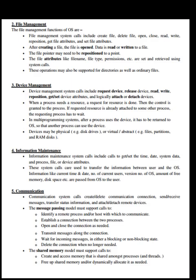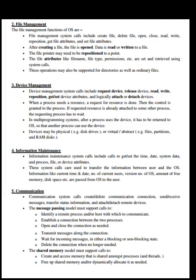File management system calls include create file, delete file, open, close, read, write, reposition, get file attributes, and set file attributes. After creating a file, the file is opened, data is read or written, and the file pointer may be repositioned. File attributes like file name, file type, and permissions are set and retrieved using system calls. These operations may also be supported for directories as well as ordinary files.